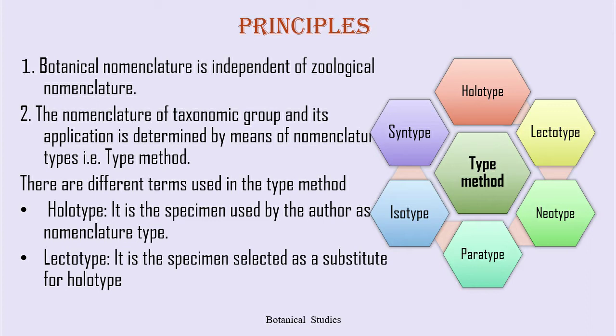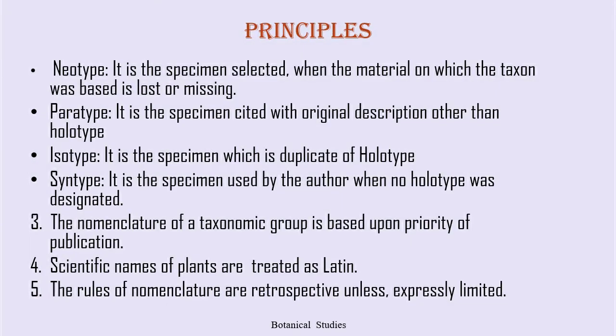Holotype is the specimen used by the author as a nomenclature type. Lectotype is the specimen selected as a substitute for the holotype. Neotype is the specimen selected when the material on which the taxon was based is lost or missing. Parotype is the specimen cited with the original description other than the holotype. Isotype is the specimen which is a duplicate of the holotype. Syntype is the specimen used by the author when no holotype was designated.